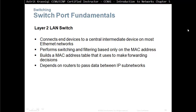So, switch port fundamentals. A layer 2 LAN switch connects end devices to a central intermediate device on most Ethernet networks. It performs switching and filtering based only on MAC addresses, builds a MAC address table used to make forwarding decisions, and depends on the router to pass data between IP subnetworks — a switch can't do that on its own.